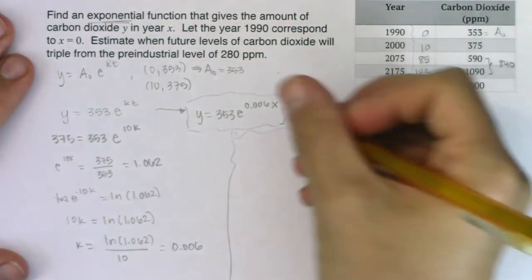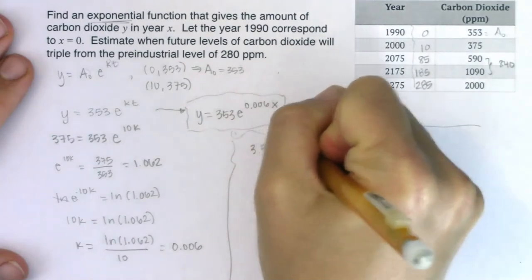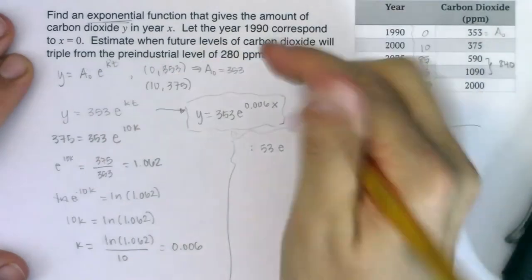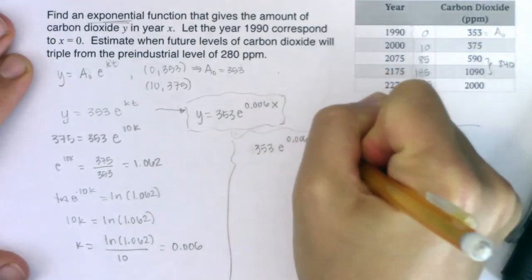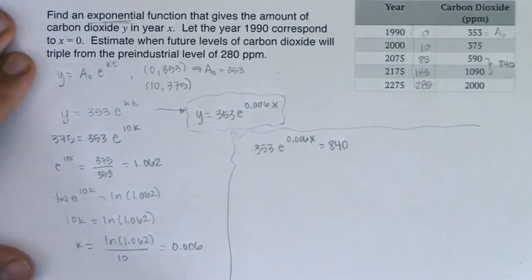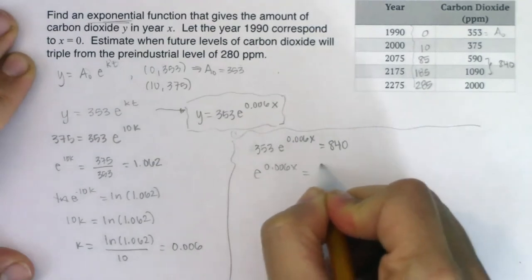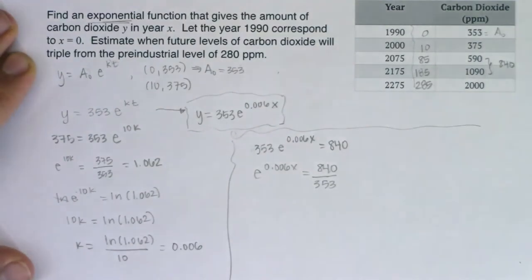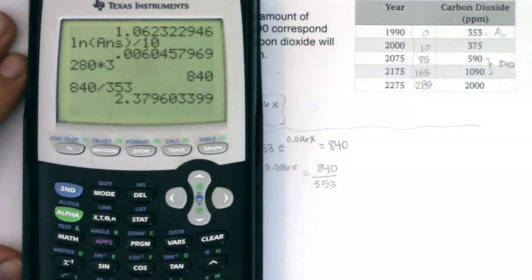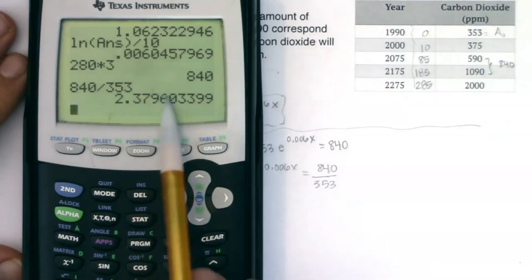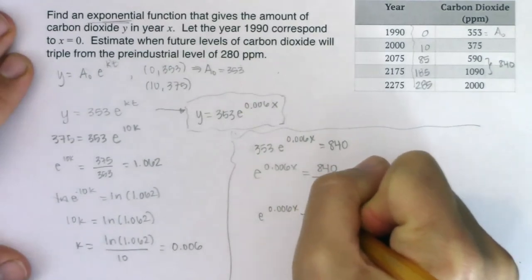Here's the second part of the problem. They're asking when is my y value going to hit 840? So let's set y equal to 840 and see what happens. If I'm going to roll through this, I want to make sure that I isolate my exponential term. Let me divide both sides by 353. So let's do 840 divided by 353, I'm looking at about 2.380. So I have that e^(0.006x) is equal to 2.380.